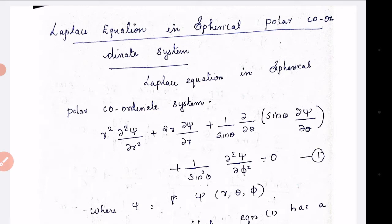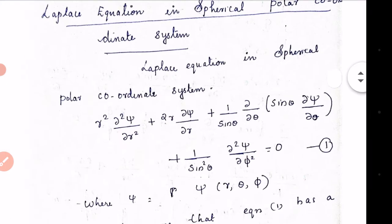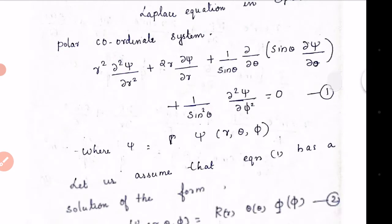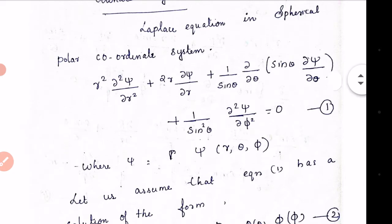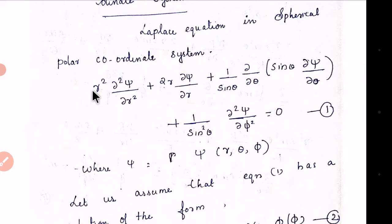This topic — the Spherical Polar Coordinate System — is more important compared to the other two. The Laplace Equation, or Del squared, is an operator, and that operator can be written in the form of a Spherical Polar Coordinate System. We have already studied Del squared in Spherical Polar Coordinate System.